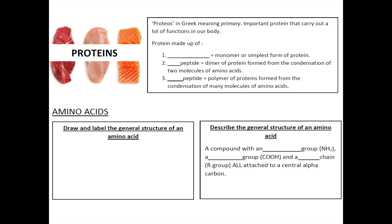Proteins — 'proteos' in Greek meaning primary. This reflects the important functions that protein plays in our everyday life. Your hair, your nails and your skin, for example, consist of a lot of proteins called keratin and also collagen. Besides becoming structural components of your body parts, proteins are also involved in various metabolic functions — for example, hemoglobin, which is involved in the carriage of oxygen, and salivary amylase, which starts the digestion of carbohydrates in your mouth.